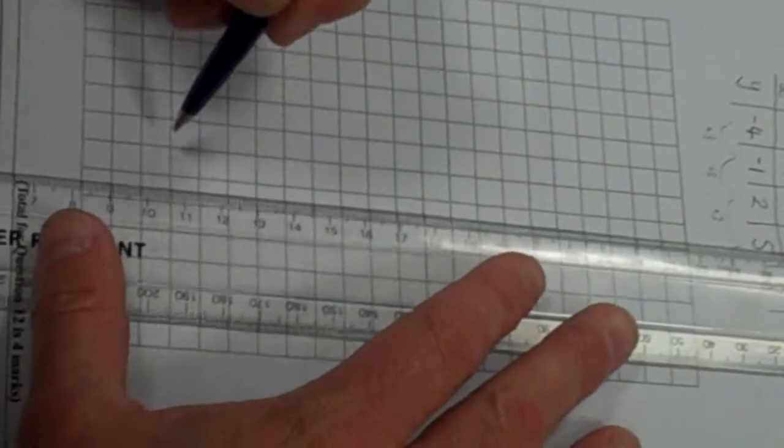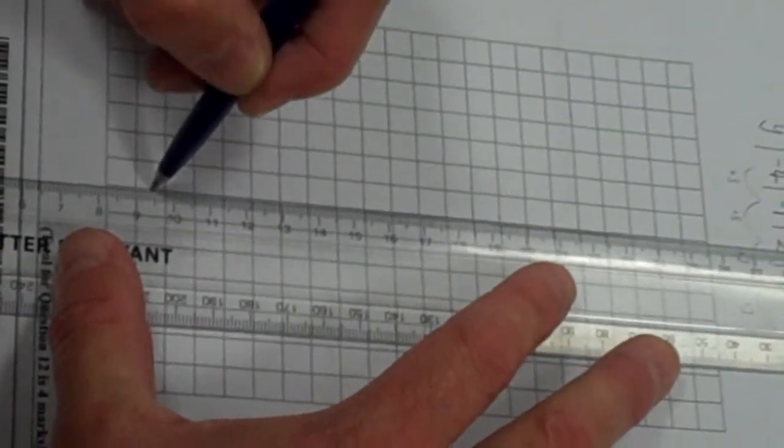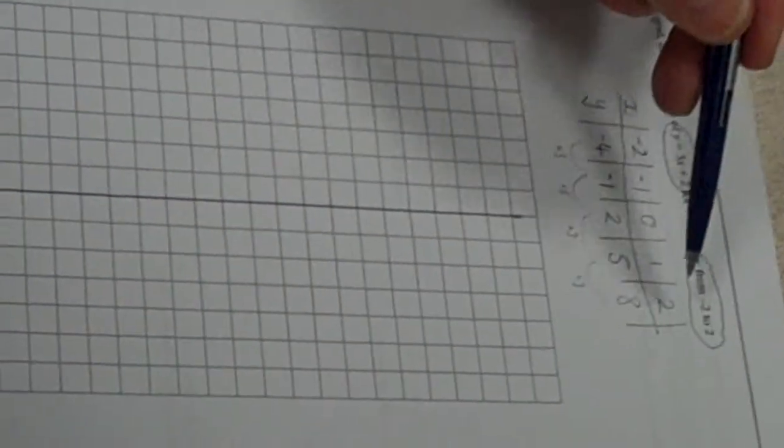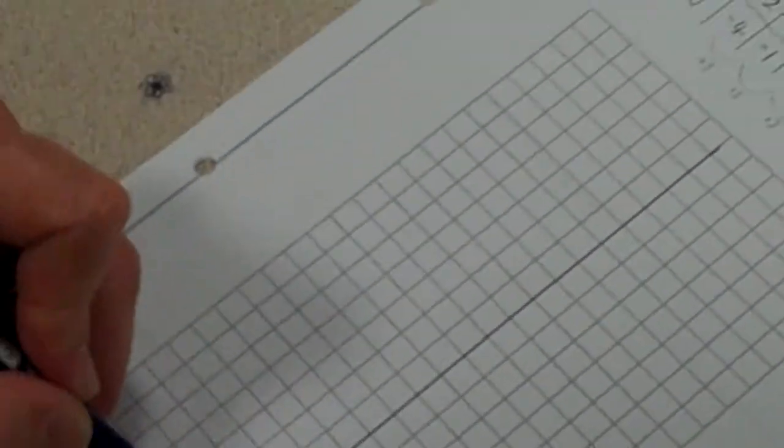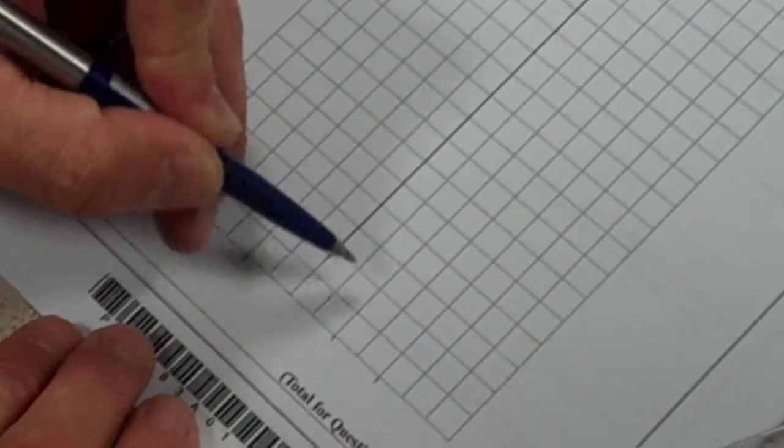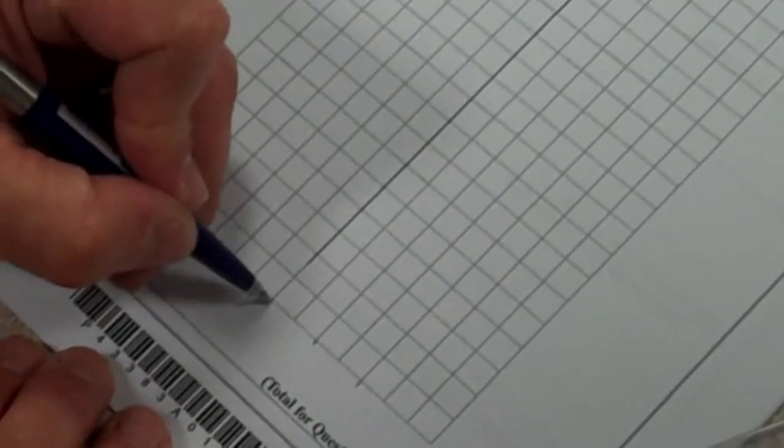I'm going to roughly do 2 squares for each one I think in the x value. So let's just choose a scale. I'm going to go, if I choose 0, the y axis is going to be down the centre because minus 2 and 2 are equal either side of it. So I'm going to do minus 1, minus 2 here, plus 1, plus 2 here. Every 2 squares is a value, so 0 along here.